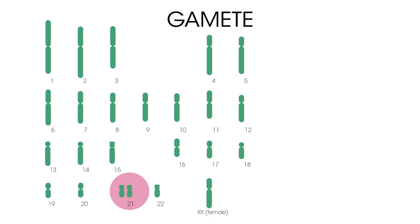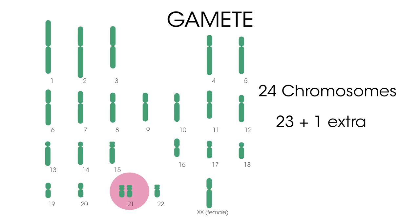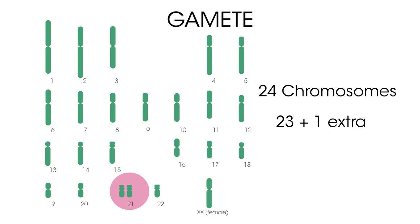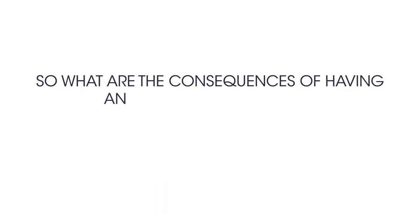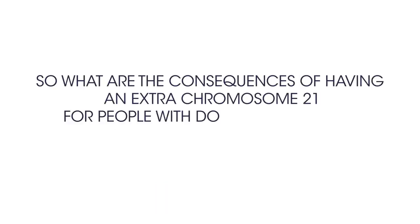In Down's syndrome, the 21st chromosome fails to segregate and the gamete produced possesses 24 chromosomes — 23 plus an extra copy of chromosome 21. The fusion of this gamete with a normal one results in the offspring having 47 chromosomes.